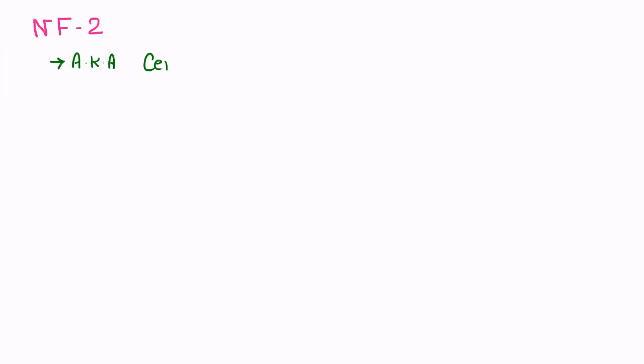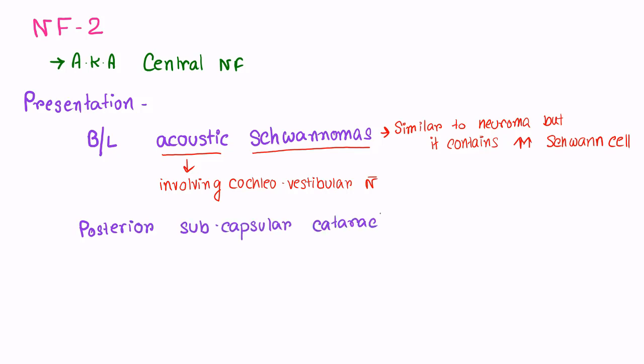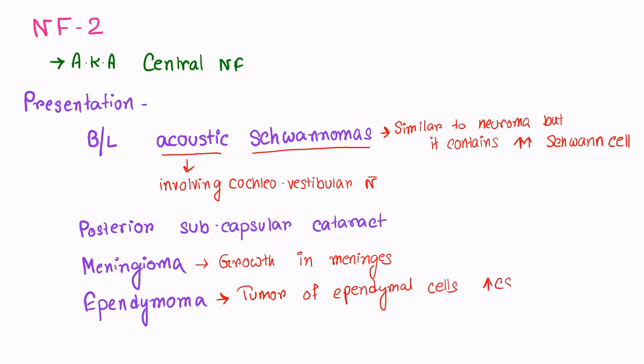Now, coming to Neurofibromatosis type 2, also known as Central Neurofibromatosis. The presentations are Bilateral Acoustic Schwannomas, which means involving the cochleo-vestibular nerve. Schwannomas are similar to Neurofibroma but they contain excessive amount of Schwann cells. Number 2: Posterior Subcapsular Cataract. Meningioma, these are growth of meninges. Ependymoma, these are tumor of CSF producing ependymal cells which results in increased intracranial pressure.